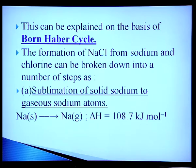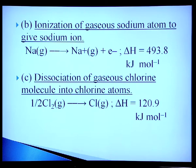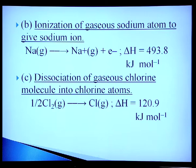The first stage is sublimation of solid sodium to gaseous sodium atoms: Na(s) → Na(g), ΔH = +108.7 kJ/mol. The ionization enthalpy for Na(g) losing one electron gives ΔH = +493 kJ/mol. In both these steps energy is absorbed. The dissociation energy of gaseous chlorine molecule into chlorine atoms: ½Cl₂(g) → Cl(g), ΔH = +120.9 kJ/mol. All these values are positive because energy is absorbed.